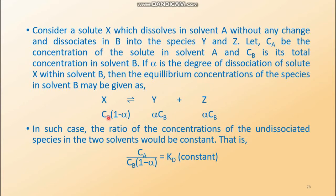If CB is the overall concentration, then the fraction (1 - alpha) remains undissociated, and CB × alpha is the concentration of both Y and Z. So if alpha is the degree of dissociation of solute X within solvent B, the equilibrium concentrations can be given accordingly. The ratio of concentrations of the undissociated species in the two solvents is CA divided by CB(1 - alpha), because the concentration of X in solvent B is CB(1 - alpha). Therefore, Kd equals CA / [CB(1 - alpha)]. This is the modified form of Kd when dissociation takes place in only one phase into two different species.